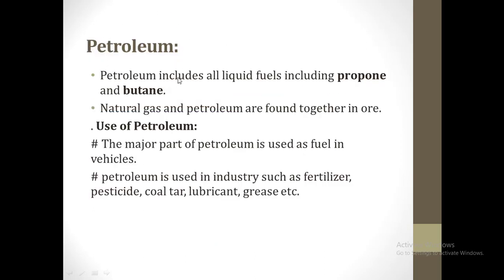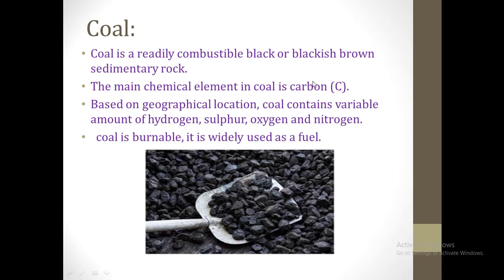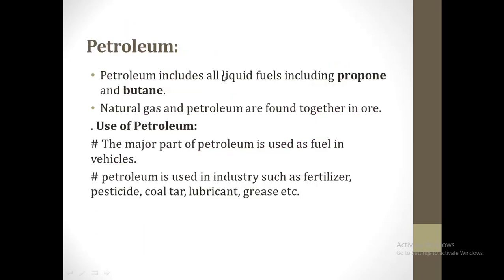Another natural resource is petroleum. Petroleum includes all liquid fuels including propane and butane. Petroleum is one kind of liquid fuel which contains propane and butane. Natural gas and petroleum are also found together in ore. The major part of petroleum is used as fuel in vehicles. Petroleum is also used in industries such as fertilizer production, pesticide production, coal tar, lubricants and bristles.